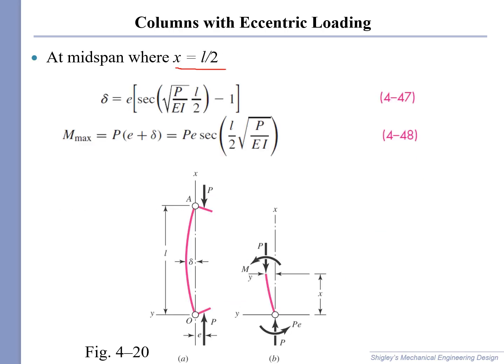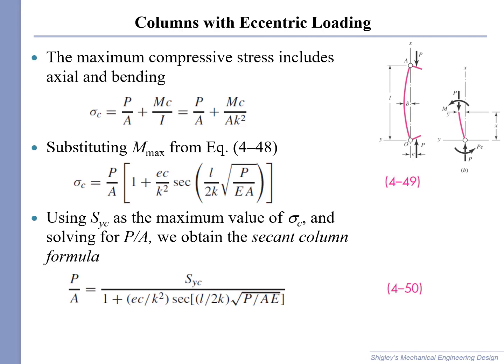At the mid-span, x is equal to L over 2, we find that the deflection is a magnified version of eccentricity using this secant formula. We plug that maximum moment in, and then we get this moment formula as shown in equation 4-48. Why is that useful? The reason is because at the midpoint of the column, we have axial and bending loads. So we take an axial stress and a bending stress, and we can find the largest compressive stress. We substitute the maximum moment into that equation, and we get the maximum compressive stress that occurs in the column. It occurs at the midpoint of the column. Then we use the yield strength in compression, a maximum allowable value for that maximum compressive stress. We solve for P over A, and we obtain the secant formula for an eccentrically loaded column of length L.